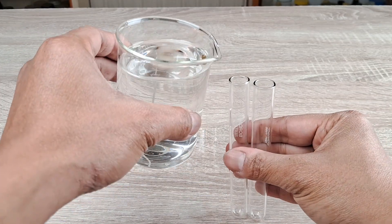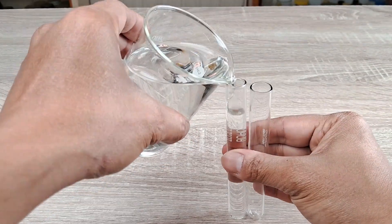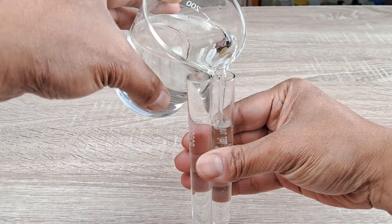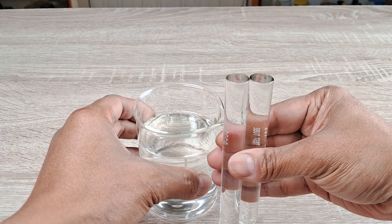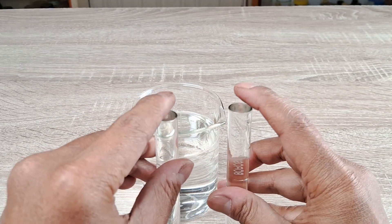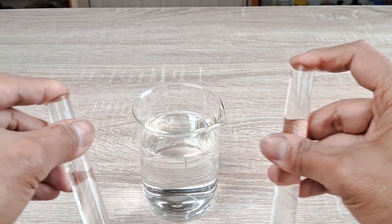Fill two test tubes to their brims with the same acidified water from the beaker. Cover the mouths of the tubes with your thumbs or fingers and immerse the tubes upside down in the beaker.